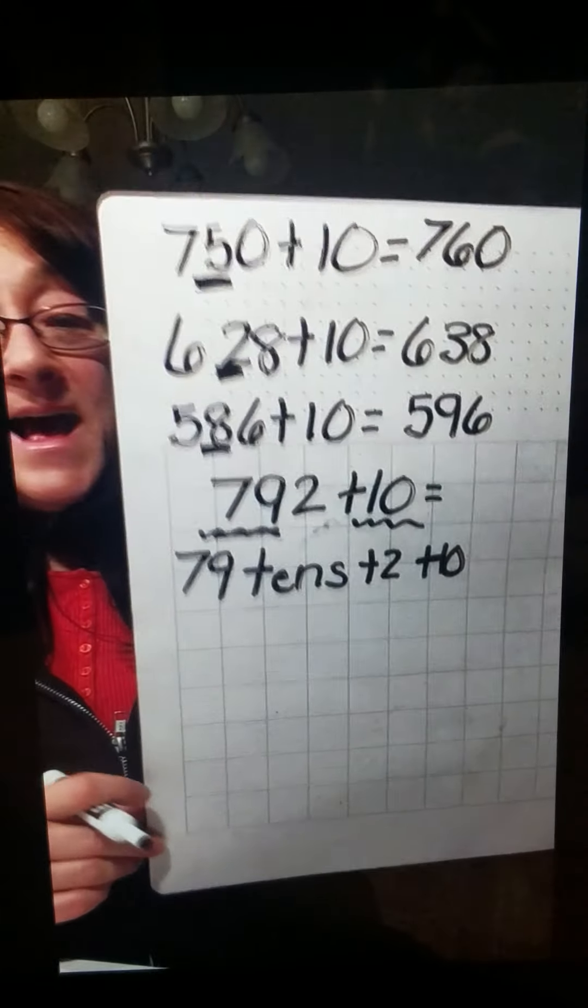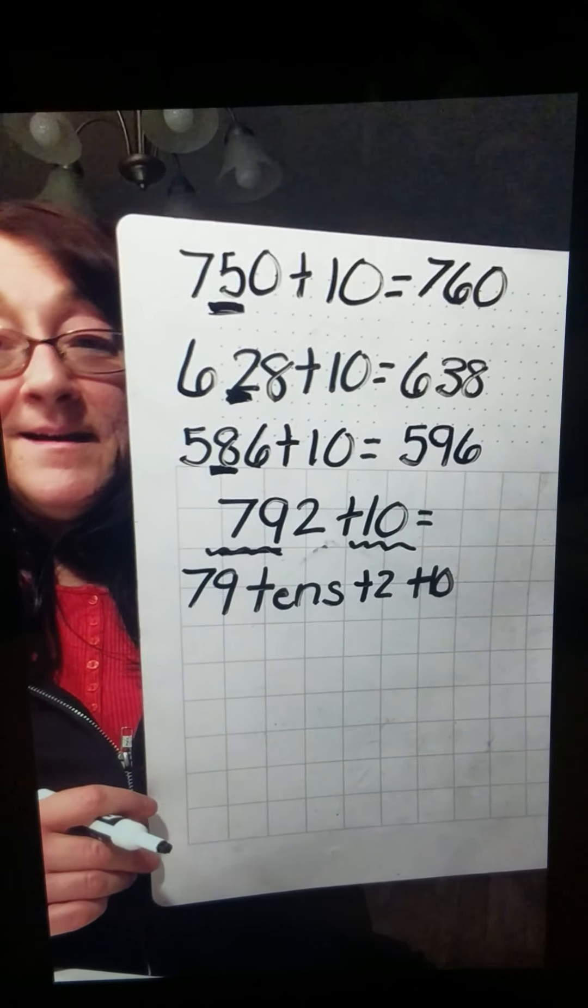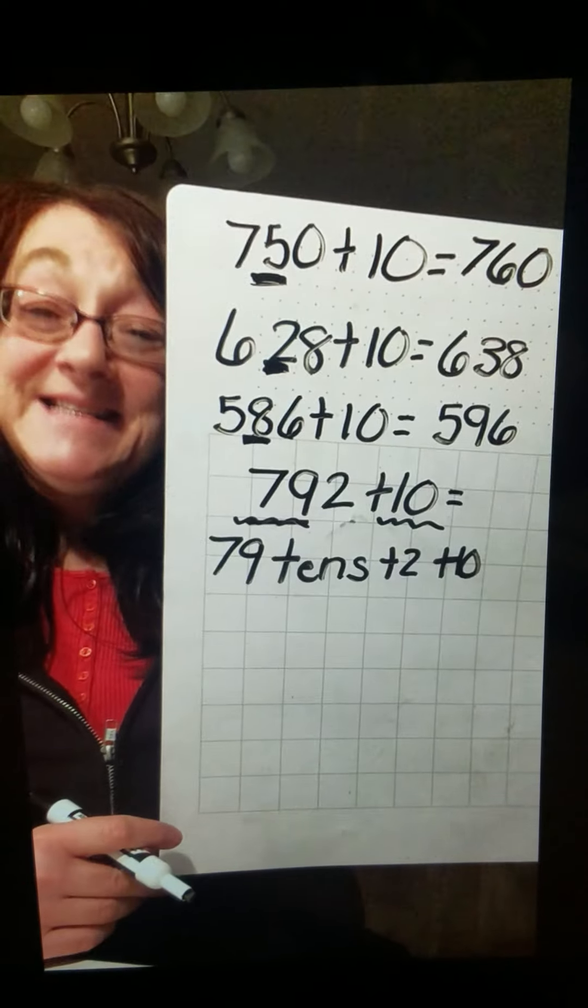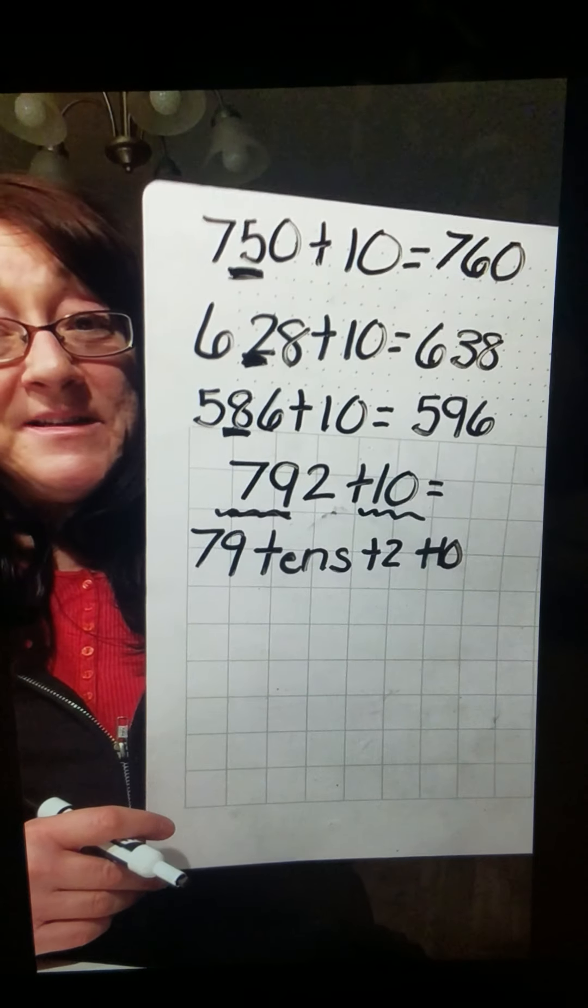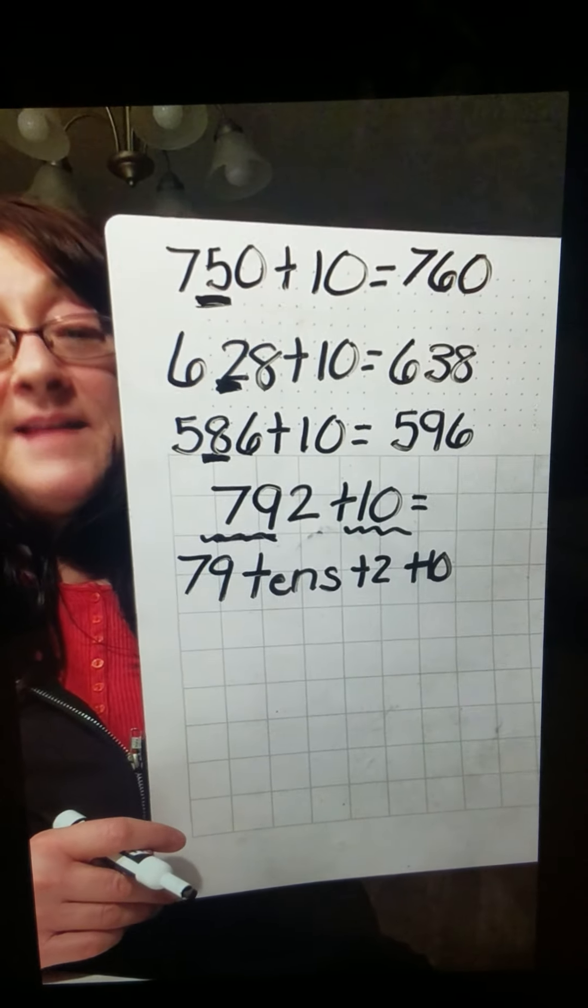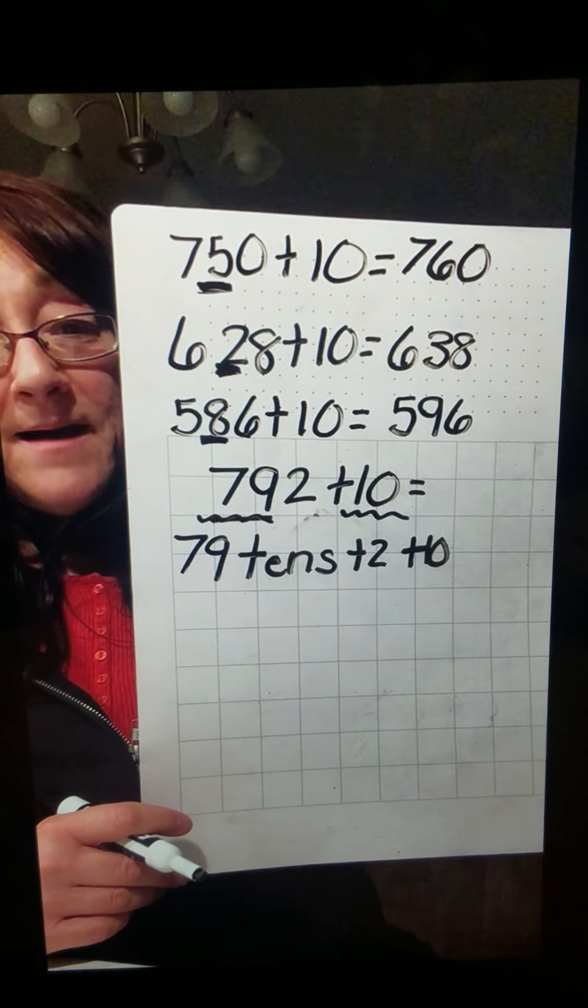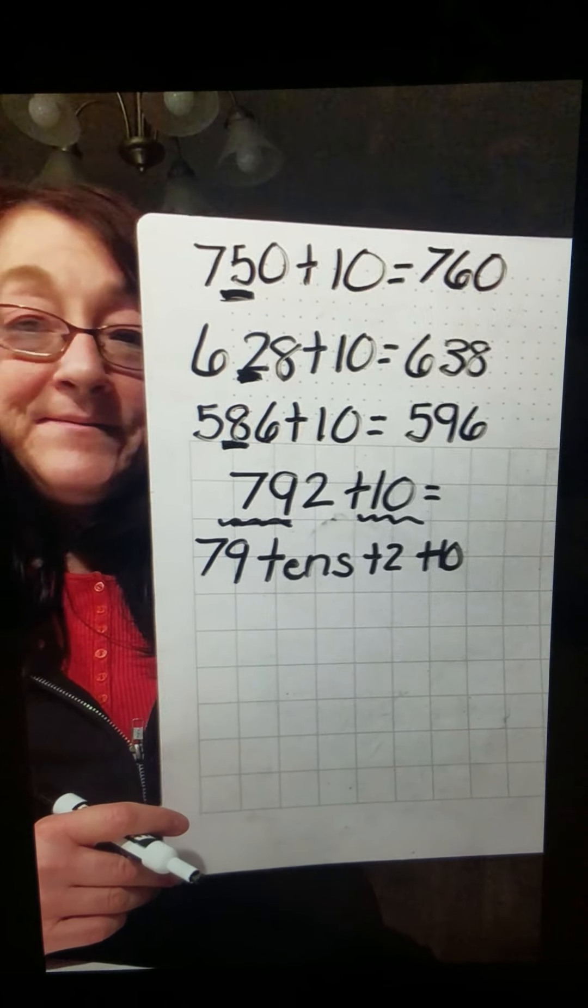So if I add 79 and I'm adding the 10 to that, another 10, another group of 10, now how many groups of 10 do I have? Not 79 anymore. Now I have, let's look at what happens.